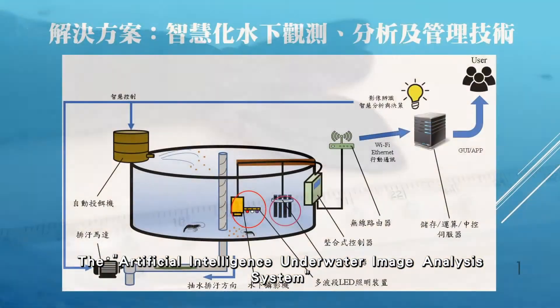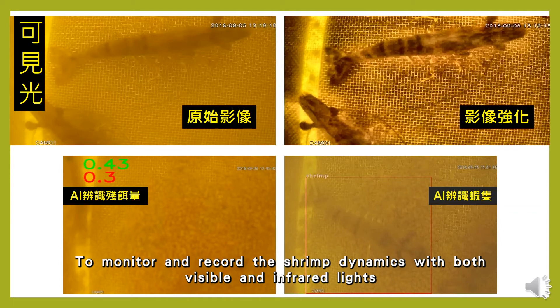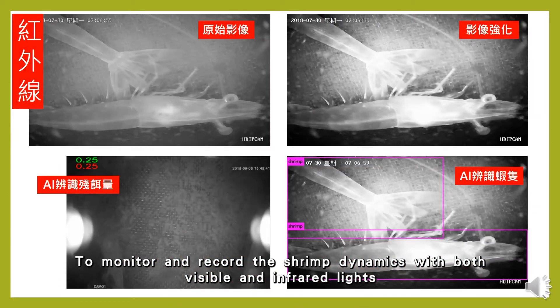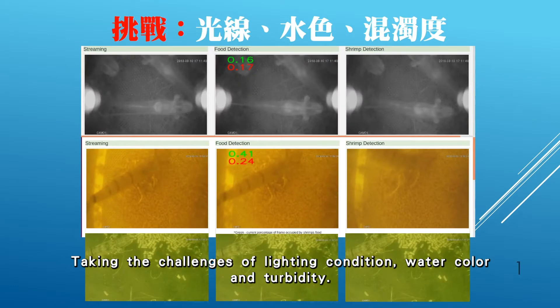The artificial intelligence underwater image analysis system has integrated water quality sensors and underwater cameras to monitor and record the shrimp dynamics with both visible and infrared light. It utilizes computer technologies to enhance underwater images, taking on the challenges of lighting condition, water color and turbidity.